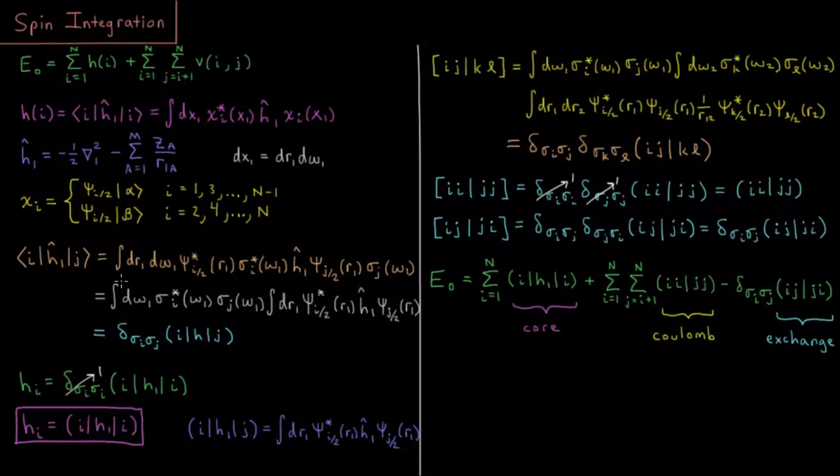So once we factor that out, we get d omega 1, sigma star i, sigma j. So we get the complex conjugate of the spin function in orbital i, and the spin function in spin orbital j. Then we have the integral of the spatial function, which is going to remain. For the spin part, we note that the spin functions are orthonormal. So if these are both alpha, it's going to be one. If they're both beta, it's going to be one. If one is alpha and the other is beta, it's going to be zero. So we can represent that as a Kronecker delta, where if they're the same, you're going to get one, and if these two are different, then you're going to get zero.